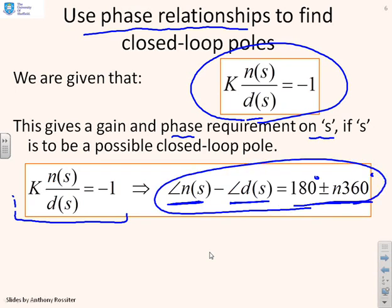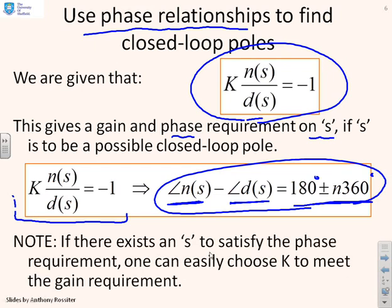Obviously the argument of n over d is the argument of n minus the argument of d. For s to be a closed loop pole we must have that the argument of n(s) minus the argument of d(s) is 180 plus or minus n times 360. The other point to note is if there exists an s which satisfies the phase requirement, I can always find a K which satisfies the gain requirement.